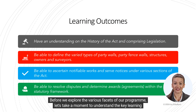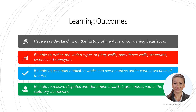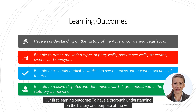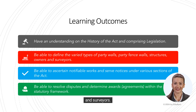Before we explore the various facets of our programme, let's take a moment to understand the key learning outcomes you can expect on completion of the course. Our first learning outcome is to have a thorough understanding of the history and purpose of the Act. Next, you should be able to define the varied types of Party Walls, Party Fence Walls, structures, owners and surveyors.